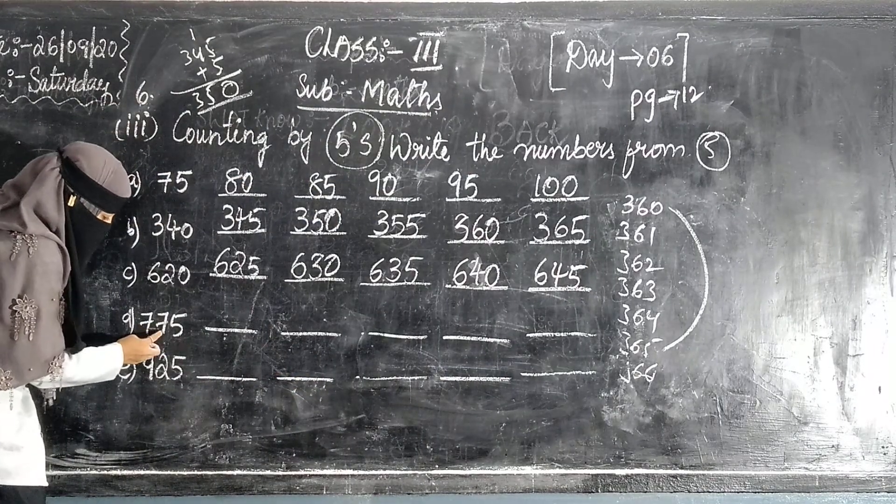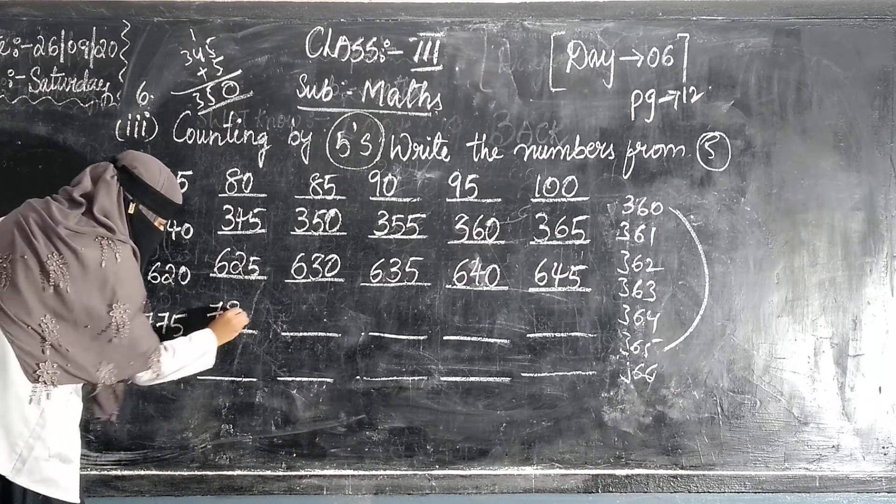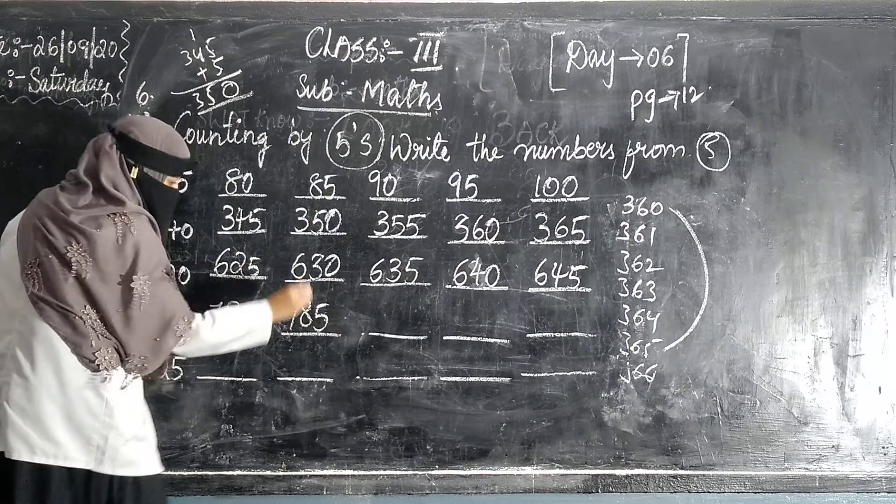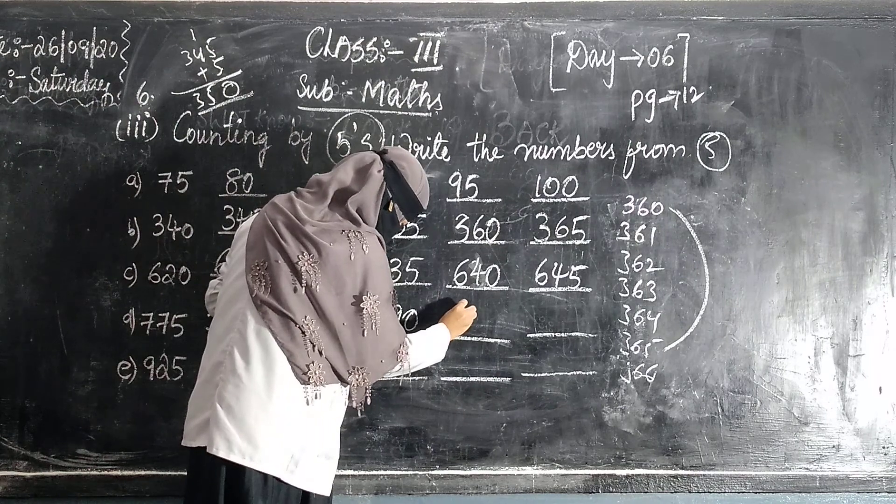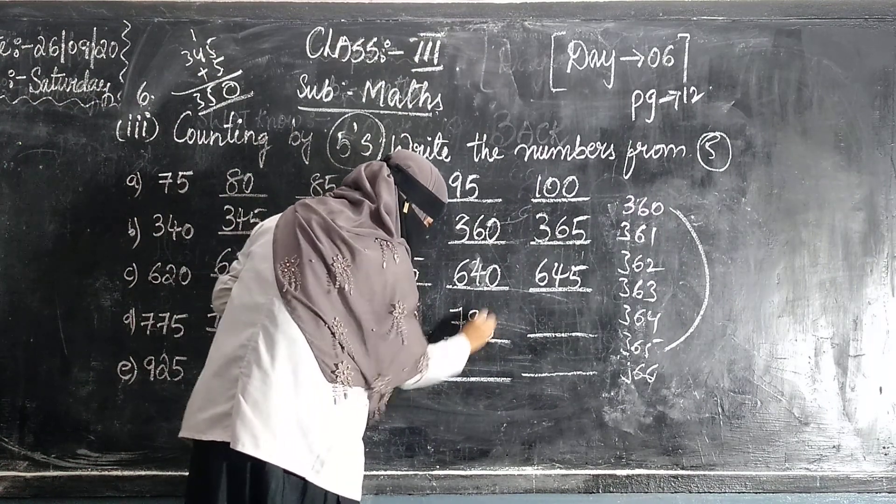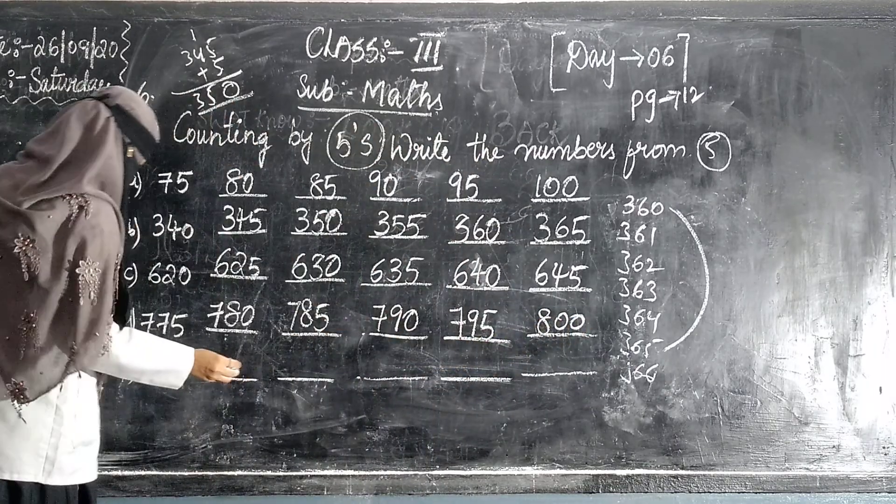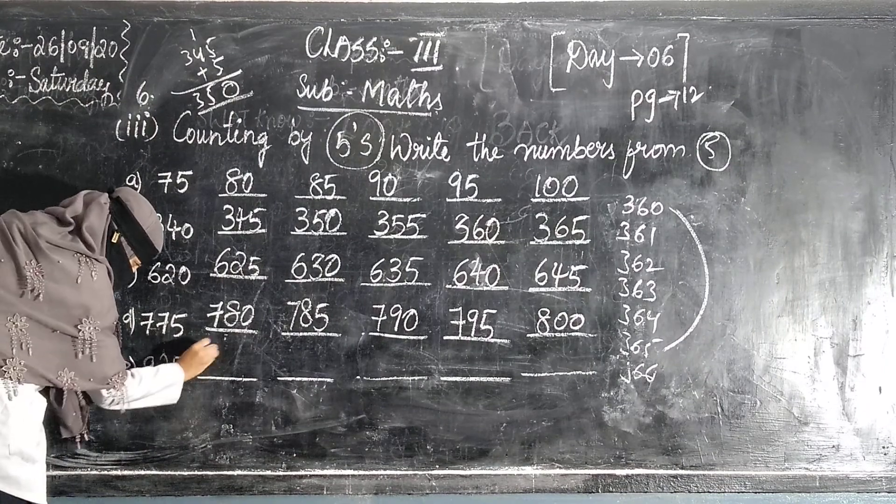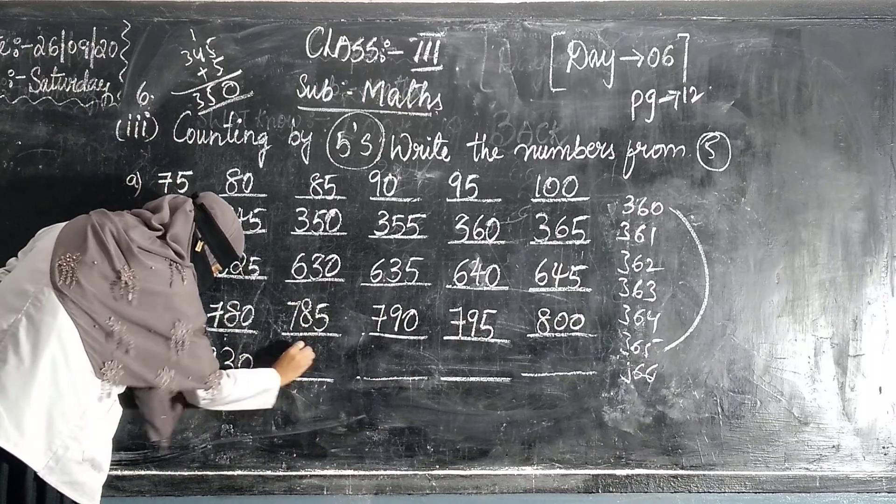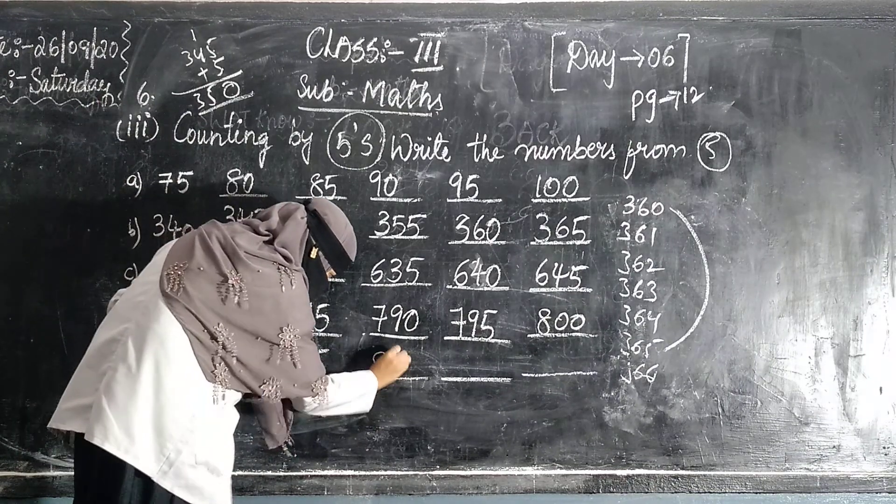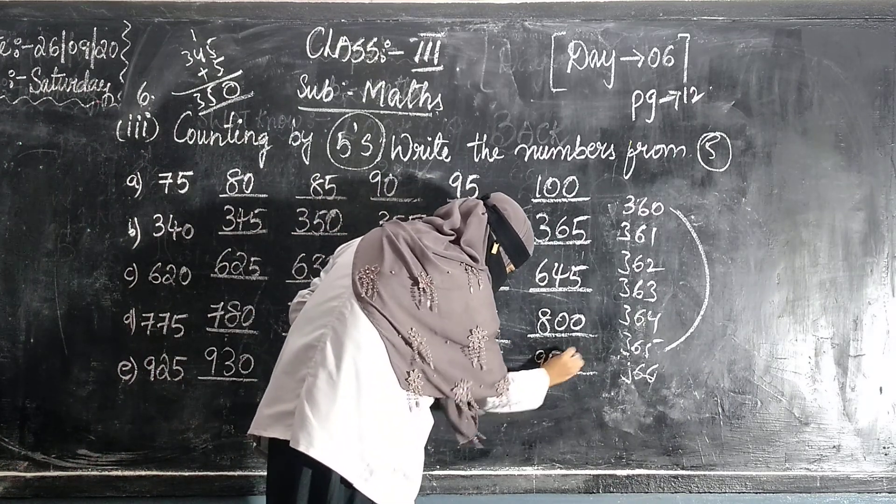Next: 775. 775 plus 5, 780, 785, 790. 880. Now 925. So add 5: 930, 935, 940, 945, 950.